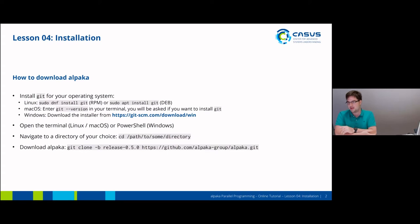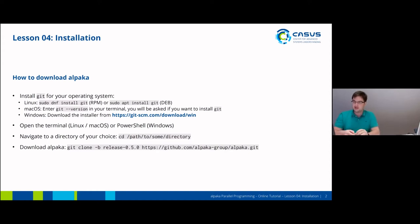Afterwards, once you have set up Git for your system, you will need to open the terminal or the PowerShell on Windows and navigate to a directory of your choice. Then you can download APAKA with the git clone command. For the purpose of this online workshop, we will stay on the stable release branch, which we just released last week. With this command, you will get the latest stable release from APAKA.